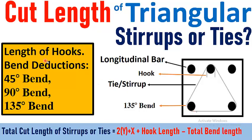Now there are different types of bends and there are bend deductions: 45 degree bend, 90 degree bend, 135 degree bend. The formula we are going to use to calculate the cut length of a triangle is 2y plus x plus hook length minus total bend length. Now what is y and x we are going to explain in upcoming slides.